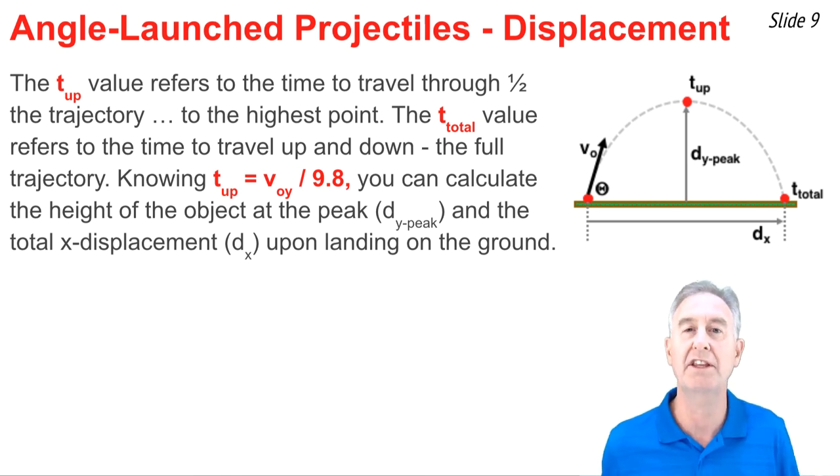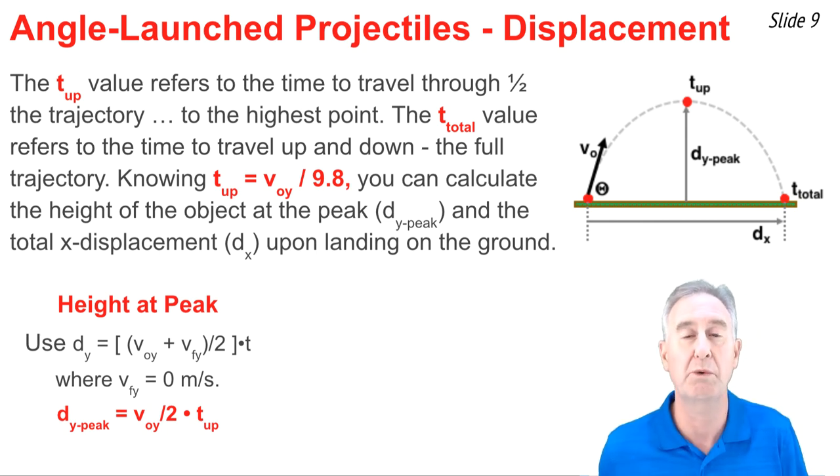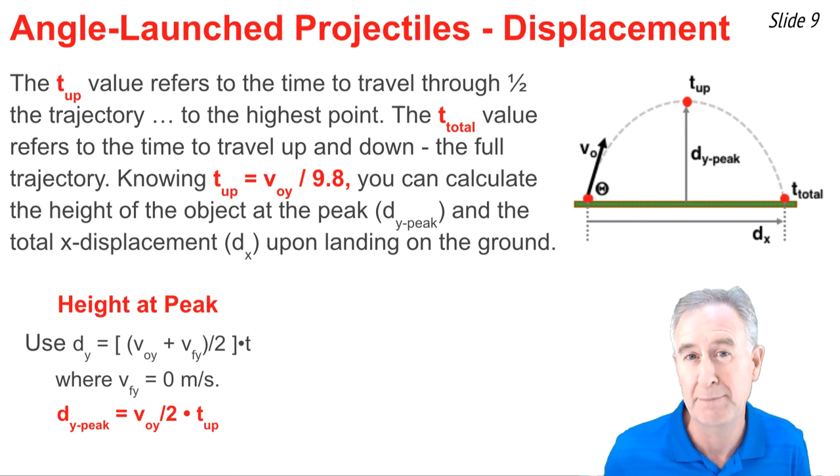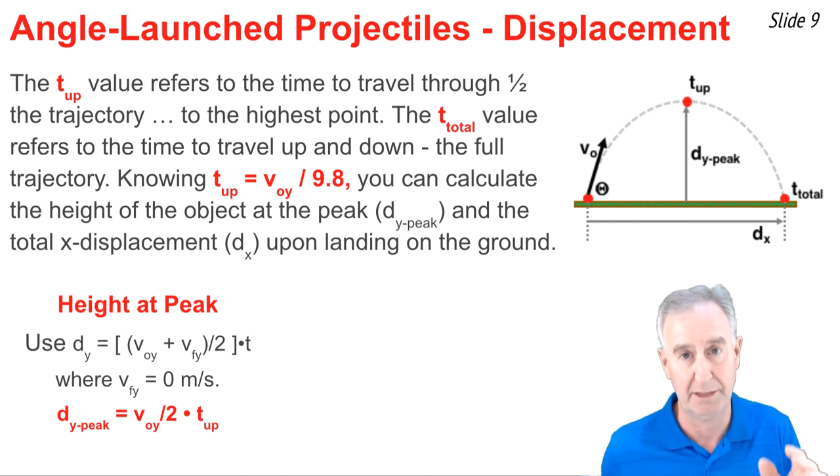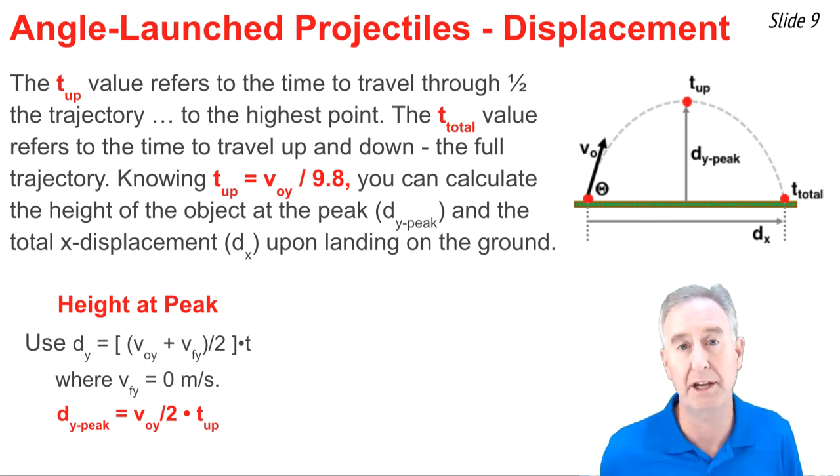To calculate the height at the highest point, I would use this equation. d equal V original y plus V final y divided by 2 multiplied by the time up. Now, the V final y at the highest point is 0 meters per second, so the equation simplifies to dy equal V original y divided by 2 multiplied by the time up.